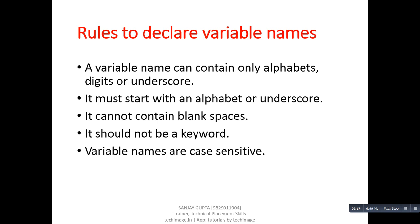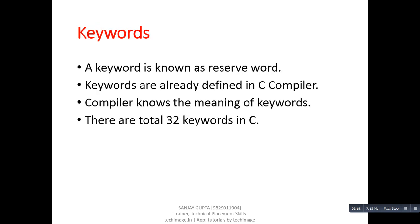Next feature is keywords. A keyword is known as reserved word. It means, compiler already knows the meaning of all the keywords. There are total 32 keywords available in C.